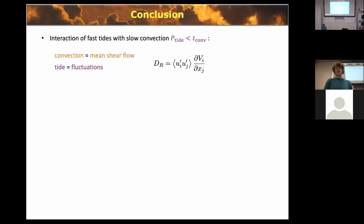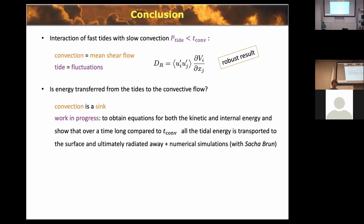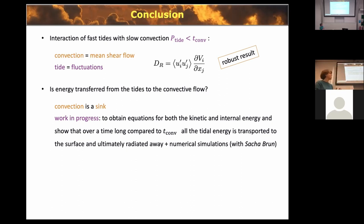In conclusion, the interaction of fast tides with slow convection implies that convection acts as the mean flow and the tide as the fluctuation. The rate of energy dissipation is given by the deformation work term D_R — a robust result anyone can verify through the formalism. The more speculative part is arguing that because convection acts as an energy sink, D_R is positive on average. I am currently designing toy models to study the interaction between a convective flow and a rapidly varying oscillation, and collaborating with Sasha in France on large simulations of the Sun to test this.